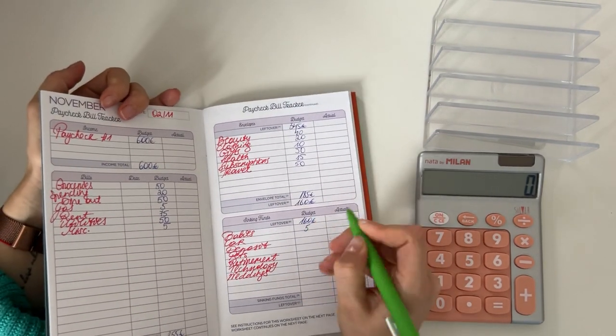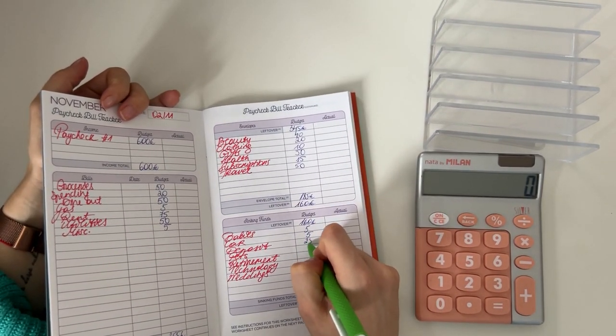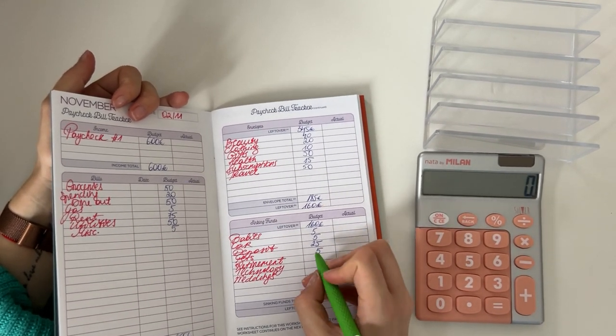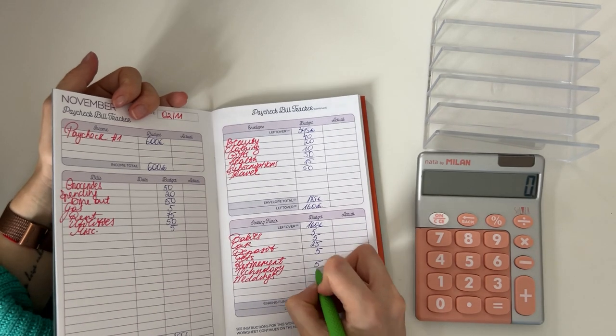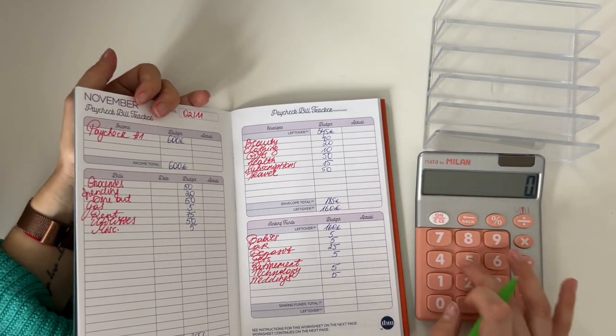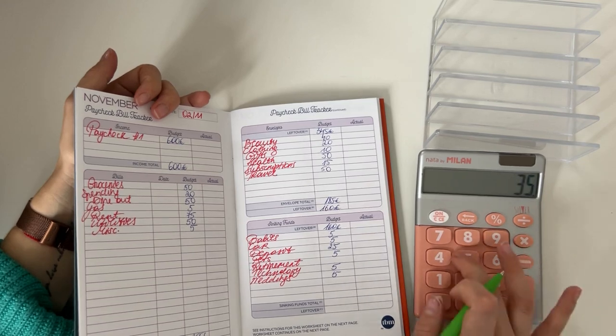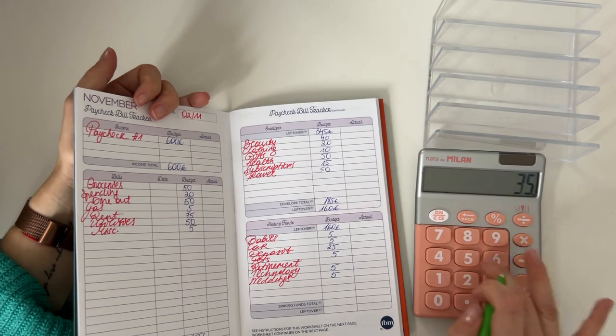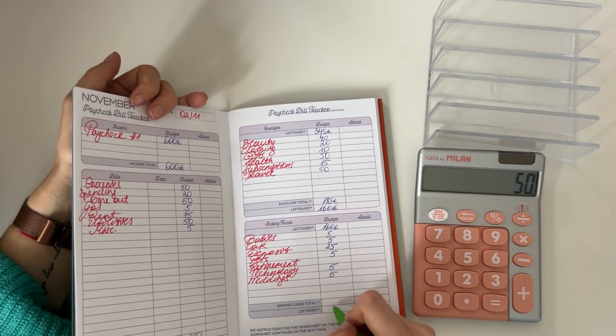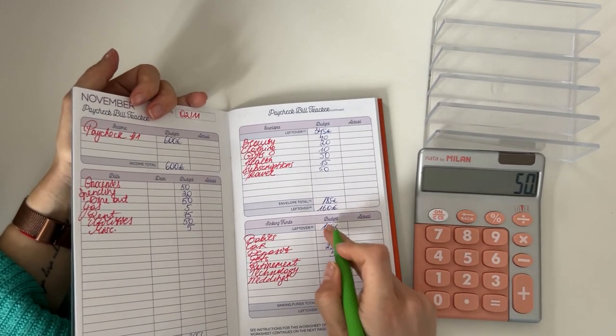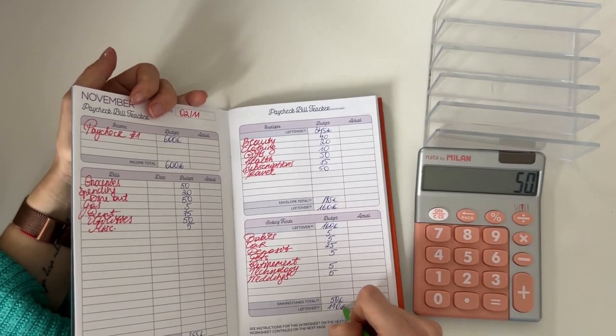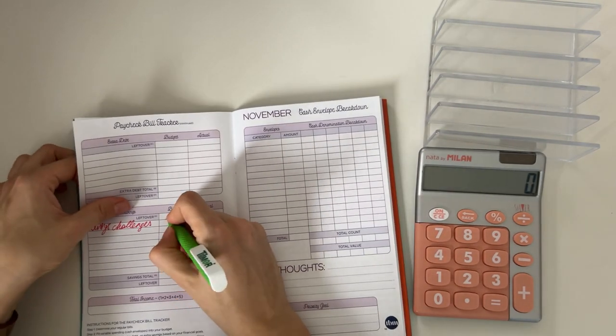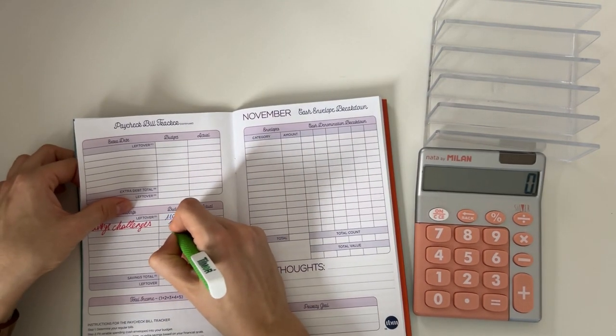We're adding 5 into babies, 5 into car, 25 in deposit, we're gonna put 5 into pets, 5 in technology and 5 in weddings. So in total that's going to be 50 euros. So 160 minus 50 is 110.